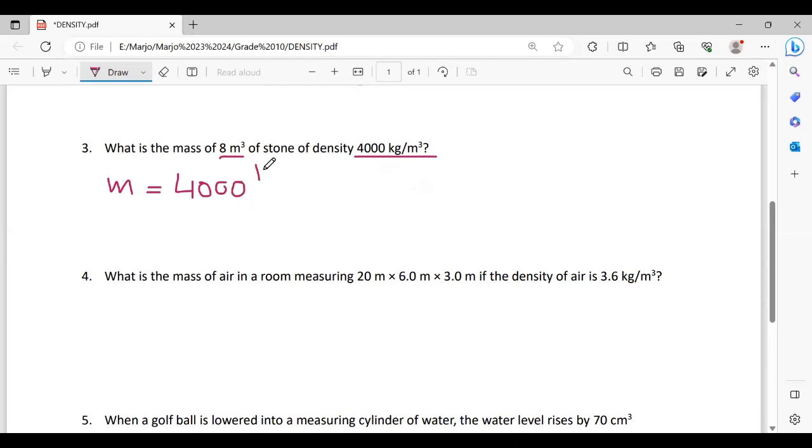kg over meter cube. Cancel divided, and it becomes 32,000 kg. This is mass.